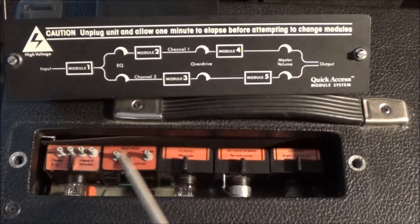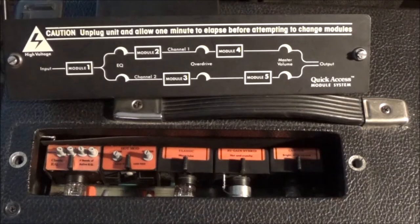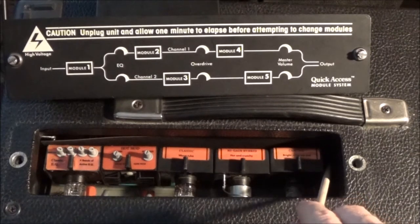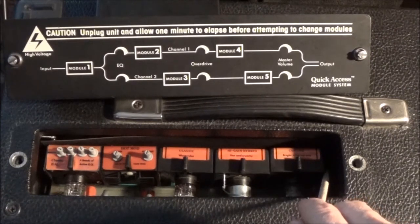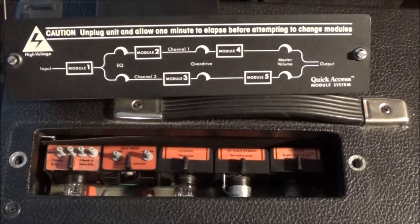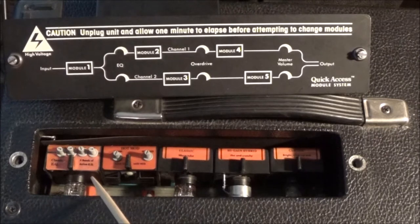Module 1, 3, and 5 is channel 2. Can't really see it, but just behind this last module is where the channel switching relay is.